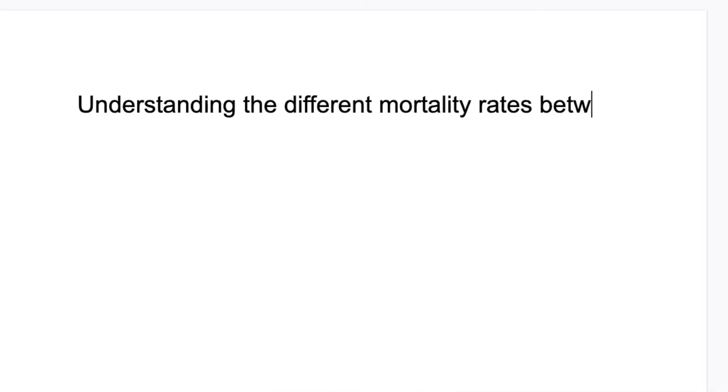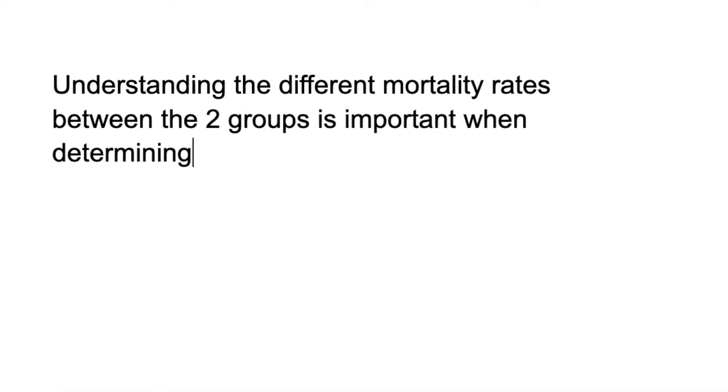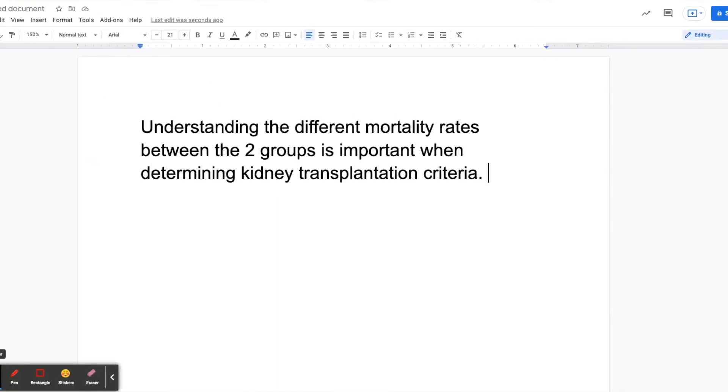Number five: too much telling and not showing. For example: 'Understanding the mortality rate between the two groups is important.' You are only telling that your research is important, but readers will ask: Why is it important? How? When? For whom? You need to show why it is important by giving examples. For instance: 'Understanding the different mortality rates between the two groups is important when determining kidney transplantation criteria.' This provides a concrete example of why your research matters and how your data can be used in a clinical setting.